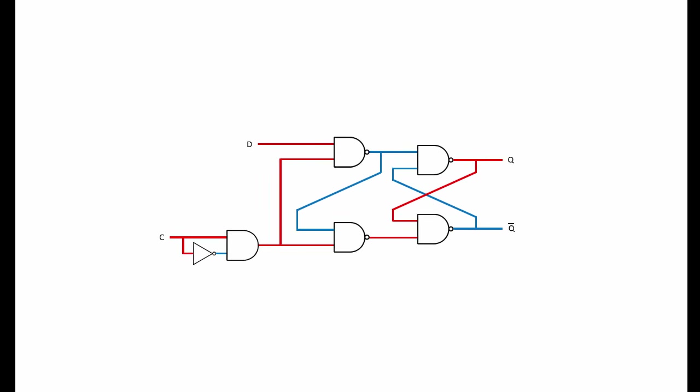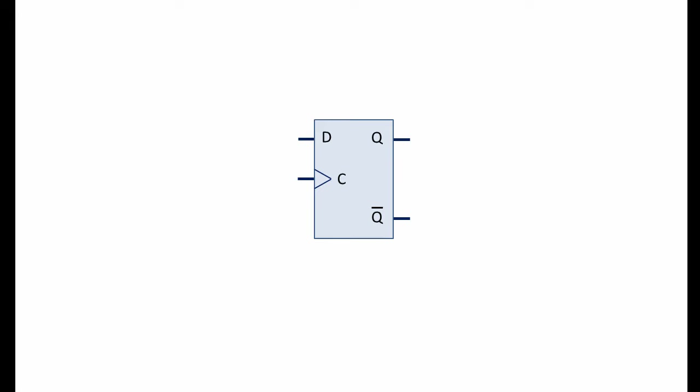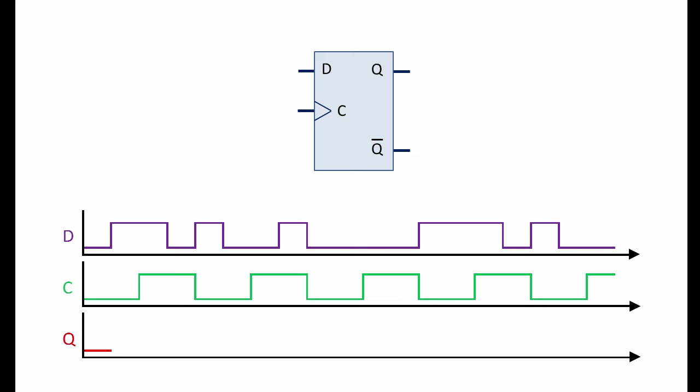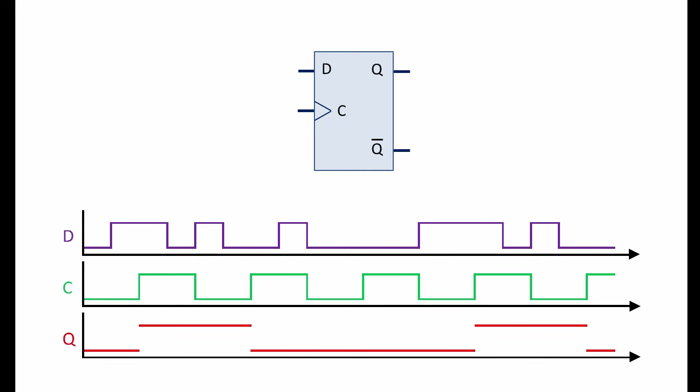The clocked D-Latch has its own symbol. Notice the addition of a triangle next to input C, indicating the dynamic nature of the clock input. D is sampled whenever there's a rising edge in the clock cycle. For the rest of the time, the device is latched — Q can't change. So this is what we would expect from an edge-triggered D-Latch, somewhat different from its level-triggered counterpart.